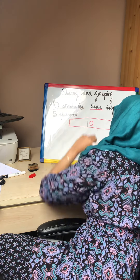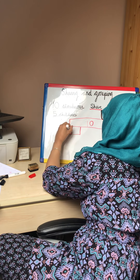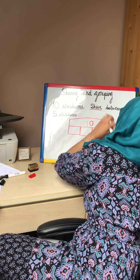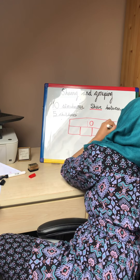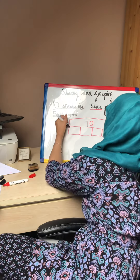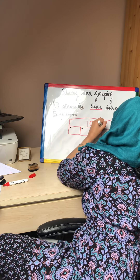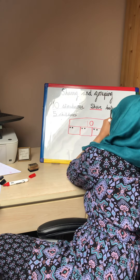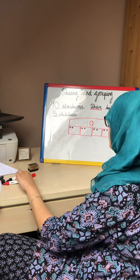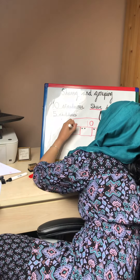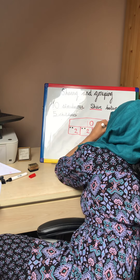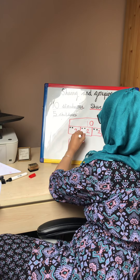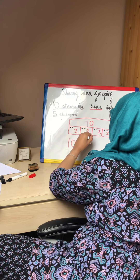We are sharing between five children, so we have one, two, three, four, five parts. Let's start sharing: one, two, three, four, five, six, seven, eight, nine, ten. How many has each child got? Two, two, two, two, and two. So 10 divided by — or shared by — five children equals two.